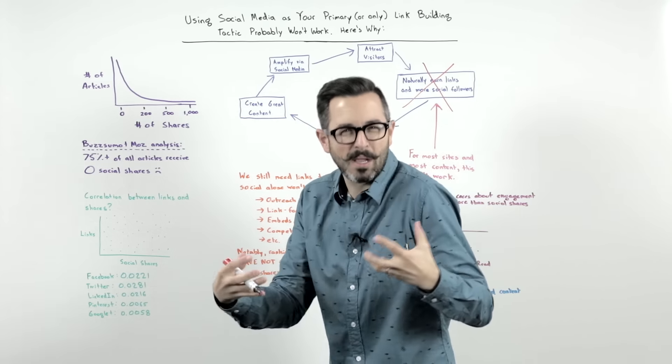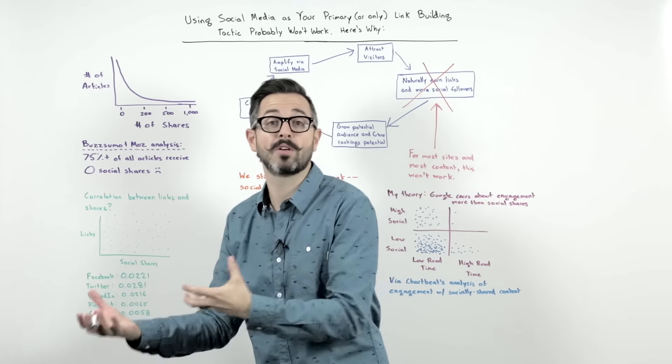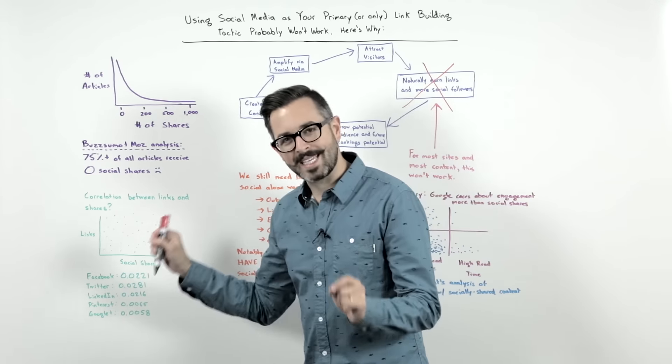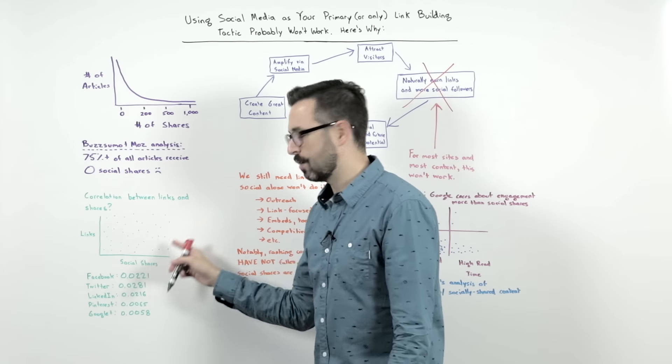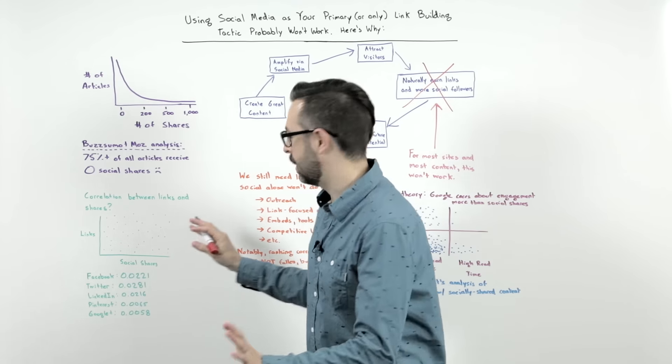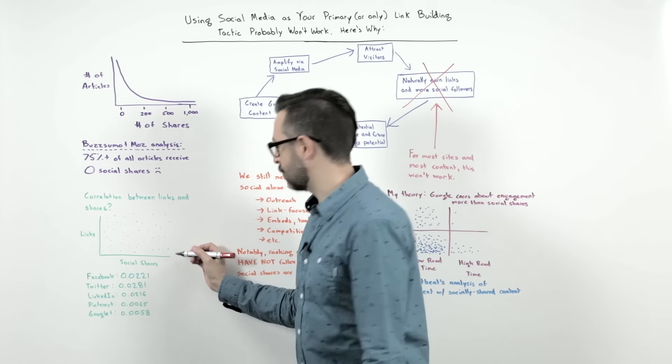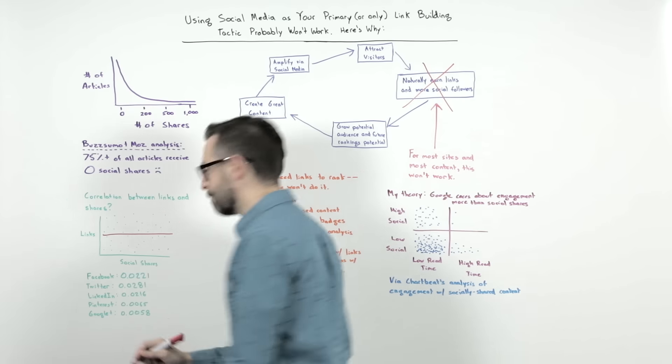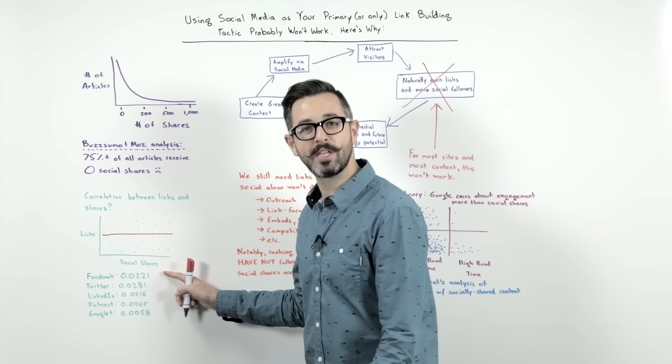Then they looked at the correlation between links and shares. As you can see from this crudely drawn scatter plot, no correlation whatsoever. If you were to draw the line here, it'd probably be something like, whoop, oh, look at that total crap correlation. Here are the numbers.